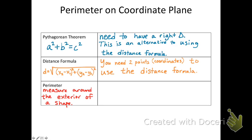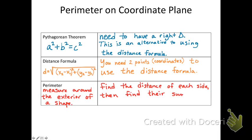If you have a triangle, the perimeter is the measure around the triangle. If you have a square, rectangle, or parallelogram, it's the measure around the outside of the shape. In order to find the perimeter, you find the distance of each side and then find their sum — add all the side lengths together.